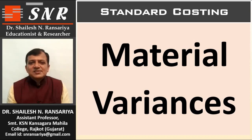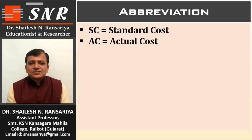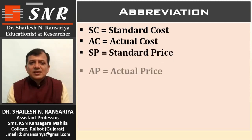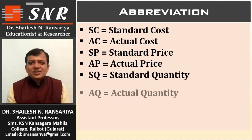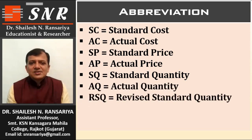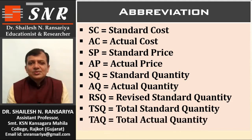Before the material variances, I will first discuss the abbreviations we will use. SC is equal to Standard Cost. AC is equal to Actual Cost. SP is Standard Price. AP is Actual Price. SQ is Standard Quantity. AQ is Actual Quantity. RSQ is Revised Standard Quantity. TSQ is Total Standard Quantity. TAQ is Total Actual Quantity. These are the short forms we will use in material variances.